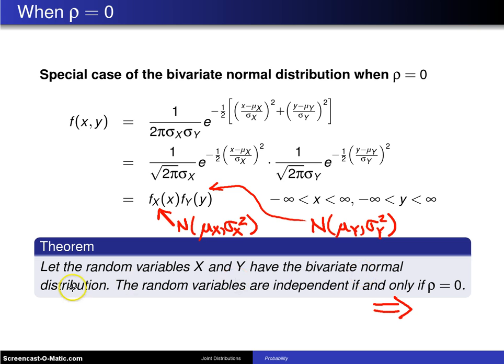Well, that's not true for the bivariate normal distribution. Not only do you go in this direction—independence implies rho equals 0—you also get to go in the other direction. That is, rho equals 0 implies that the two random variables are independent by this particular result.